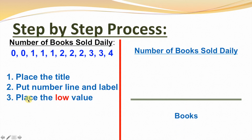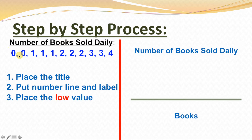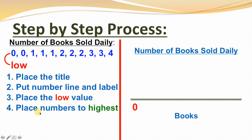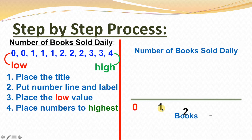Step 3, place the low value. We're going to put the lowest value in our data set on the number line. Since we have it ordered from least to greatest, we just look at this end — our lowest number is zero. So we'll put that on our number line. Step 4, place the numbers to the highest. Since our numbers are in order from least to greatest, we know our greatest number is four. So on our number line, we're going to write the numbers from zero all the way to four.